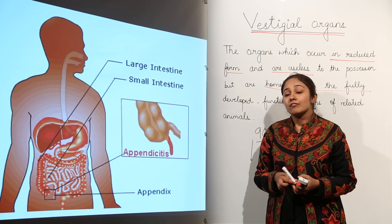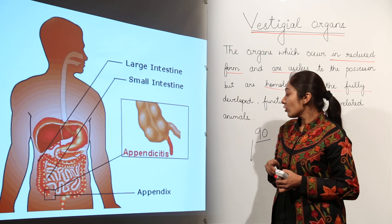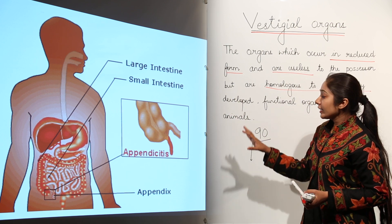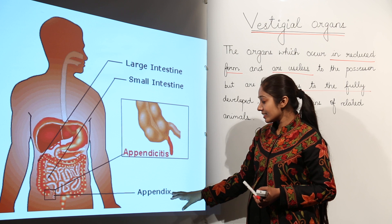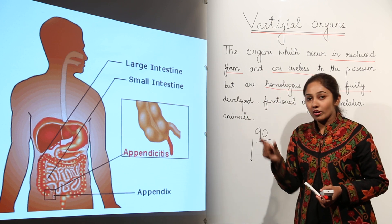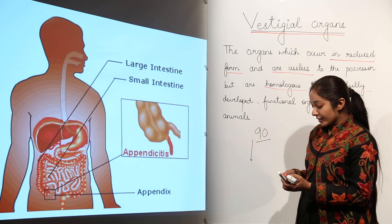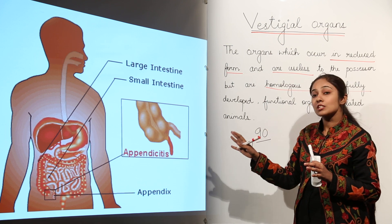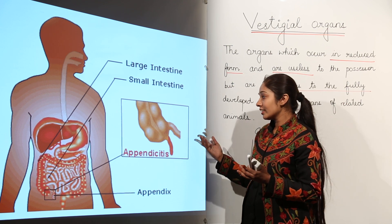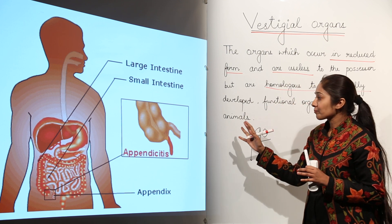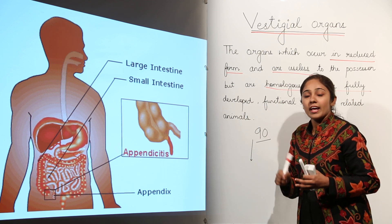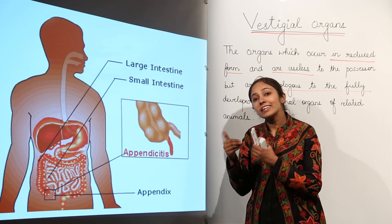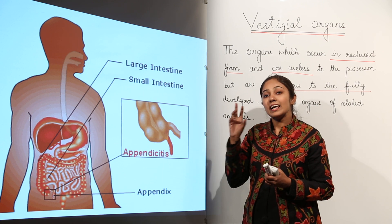That number was reported when vestigial organs were not properly studied. Now this number has reduced and we have fewer vestigial organs. One example is the appendix — a tube-shaped organ present at the junction of the large intestine and small intestine, which has no function in the human body now. It is supposed that we have this appendix because we had a plant-eating ancestor.